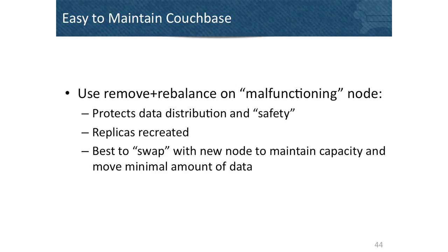If a node is not performing well but is still alive, you can remove it while ensuring data stays replicated, protecting data distribution and safety. If you're monitoring and see a node starting to have problems — maybe the disk is filling up — you can remove it before it becomes a critical issue. Best practice is to swap it with an equally sized node to maintain the overall cluster capacity.